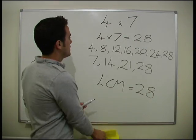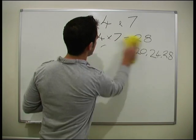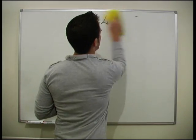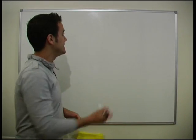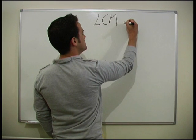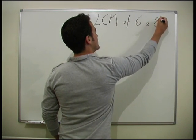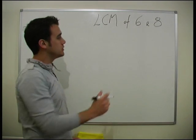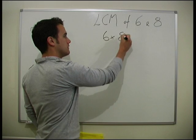OK? That's not always the case. It's not always the number you find here. OK? So now we'll look at 6 and 8. So now we need to find the lowest common multiple of 6 and 8. Again, first thing you do, 6 times by 8.